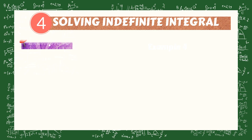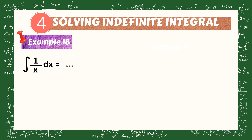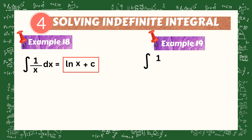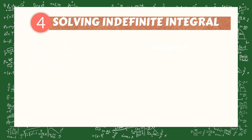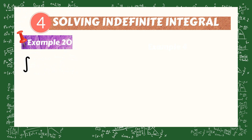Another example: the answer is equal to ln times the quantity x minus 5 plus C. Let's try some trigonometric functions. Evaluate the integral of cos x dx. The antiderivative of cos x is equal to sin x plus C.